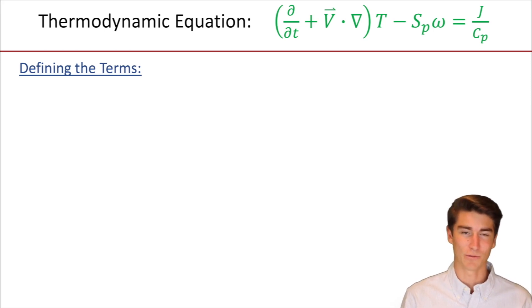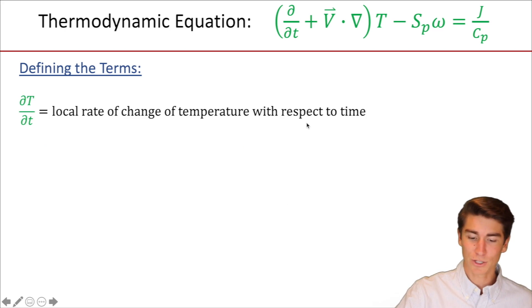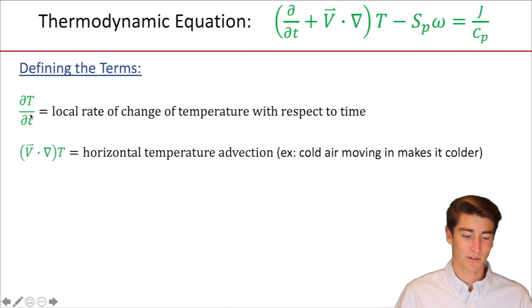So now that we have all the symbols, we know at least partially what they mean, let's define the terms. The first term is when this d/dt right here gets distributed with the temperature symbol. So that's going to turn into dT/dt. This means the local rate of change of temperature with respect to time. So how much is temperature changing as you move forward, let's say, five minutes? It could be a 10 degree temperature change over five minutes. That's basically all that means.